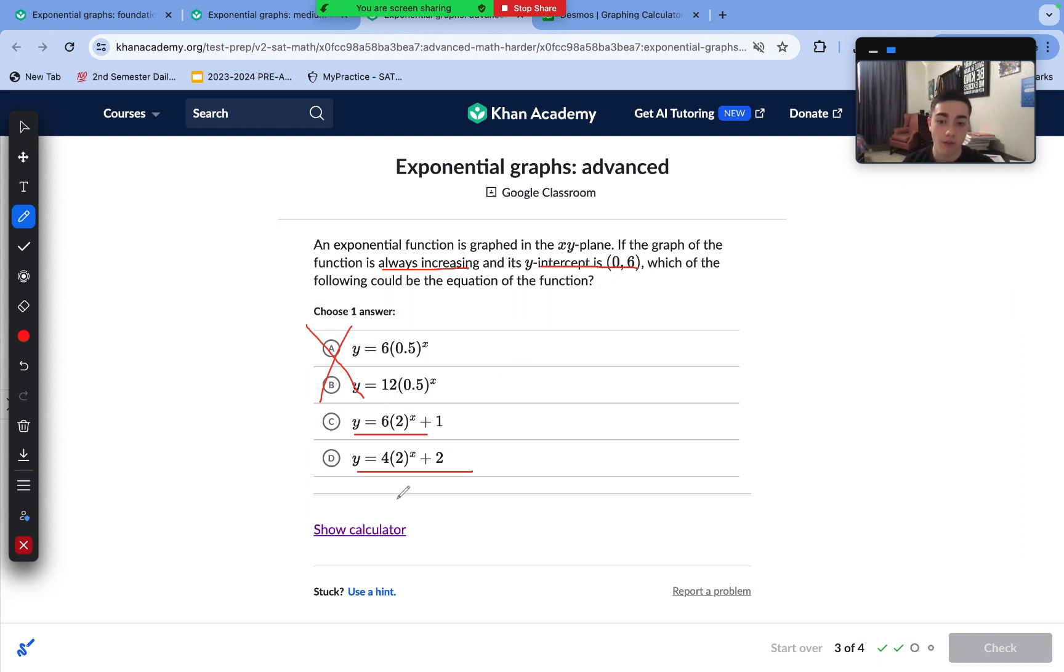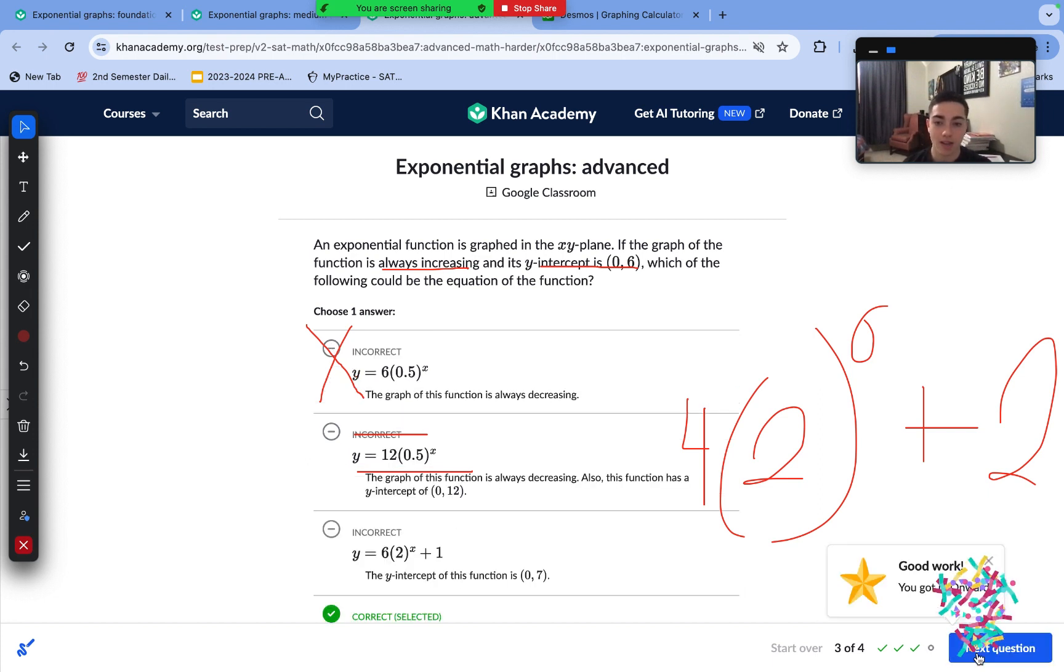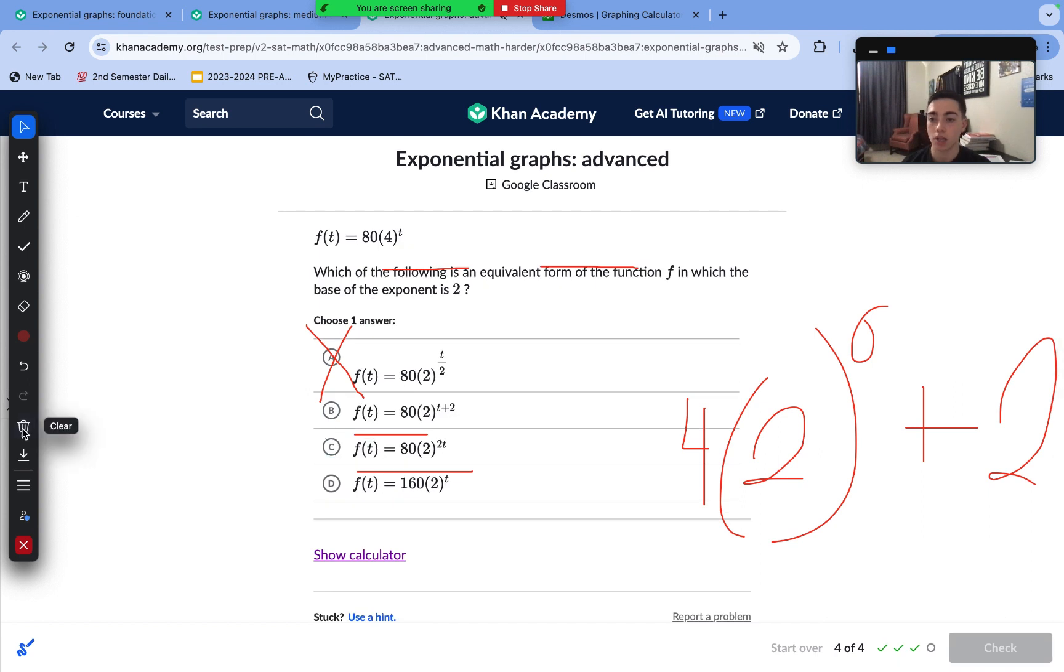Now taking a look at C and D, they're both increasing, and we need to see which one has a y-intercept of (0, 6). When we substitute in 0 for x in answer choice D, we have 4(2^0) + 2. 2 to the power of 0 is 1. 4 times 1 is 4. 4 plus 2 is 6. So answer choice D is the correct answer. It fulfills both the y-intercept and the always increasing constraint.